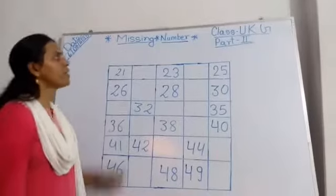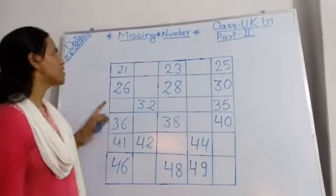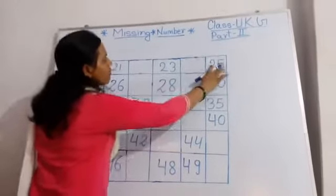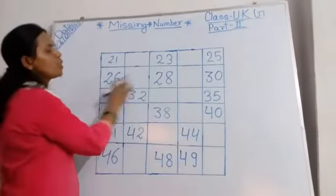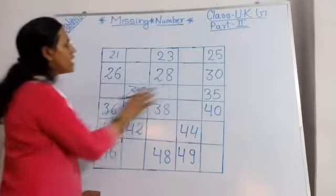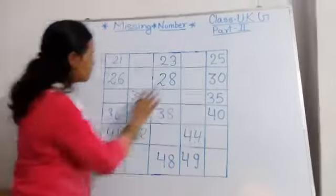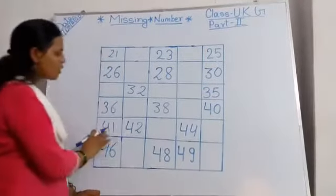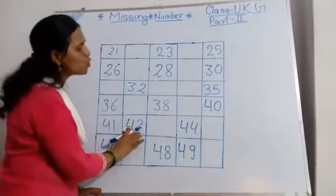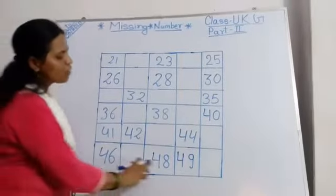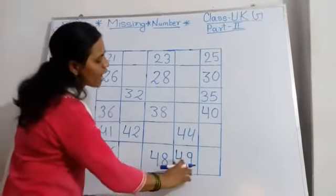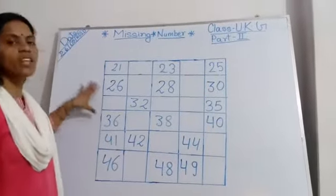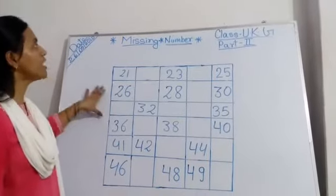Children, I have written some counting numbers on this whiteboard. Look carefully: 21, 23, 25, 26, 28, 30, 32, 35, 36, 38, 40, 41, 42, 44, 46, 48, 49. Some counting numbers are missing in the column, so write down the missing numbers.